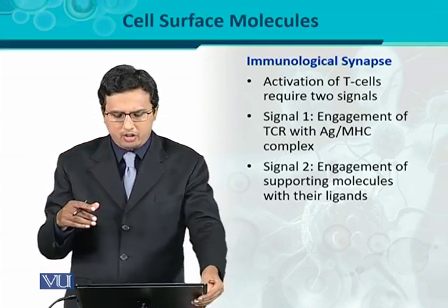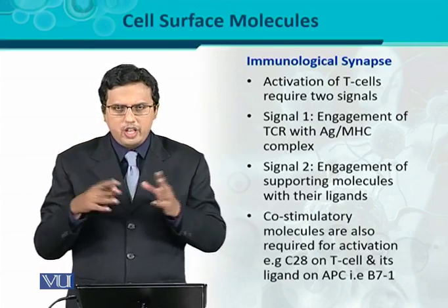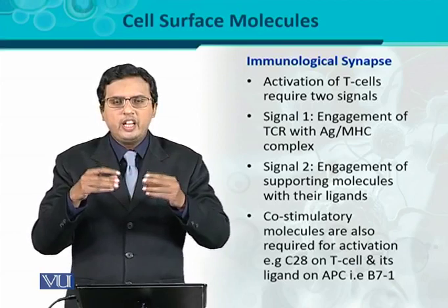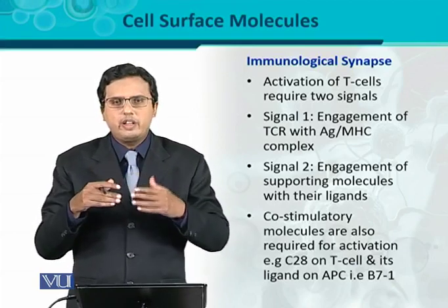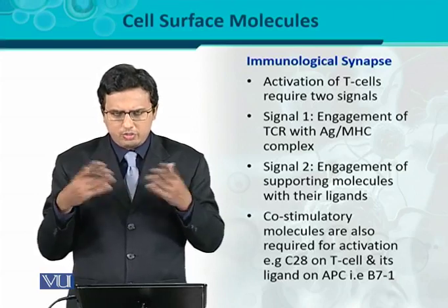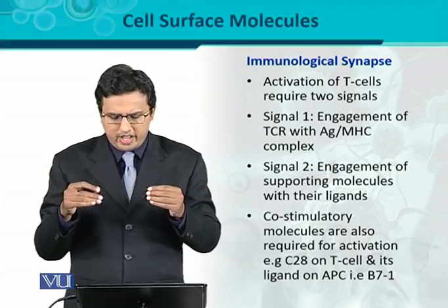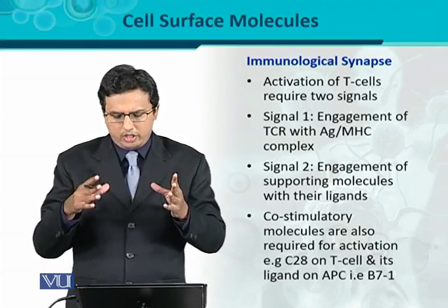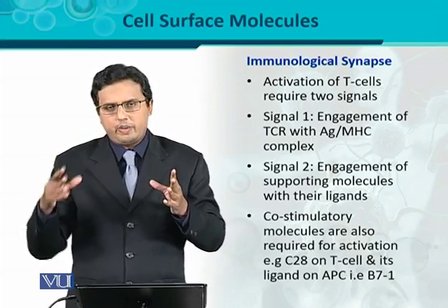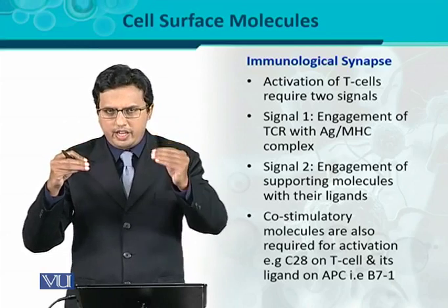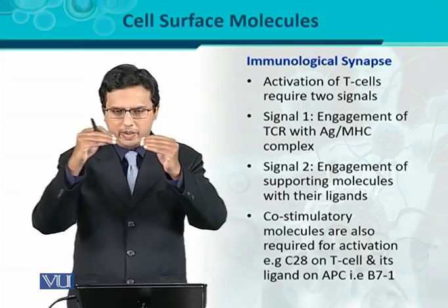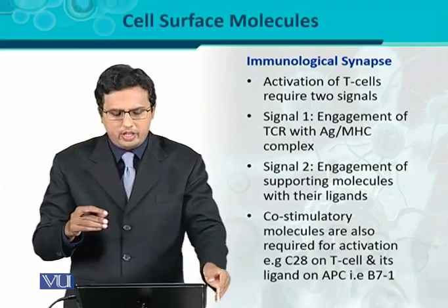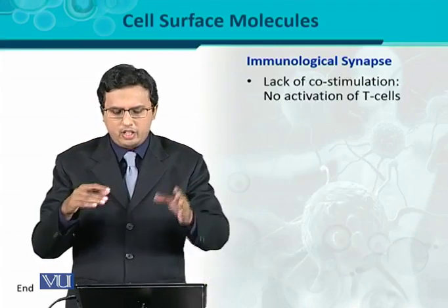For example, the co-stimulatory molecules — as the name suggests — these are stimulatory but cooperate with that stimulation; that is why they are called co-stimulatory molecules, and they are required for T-cell activation. For example, CD28 is a molecule on the surface of T-cells, and its ligand B7-1 is on the antigen-presenting cell. CD28 on the T-cell and B7-1 on the APC interact with one another, acting as receptor and ligand, making the interaction much stronger.